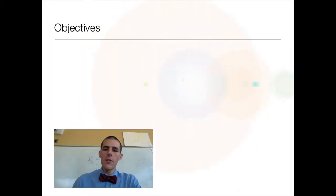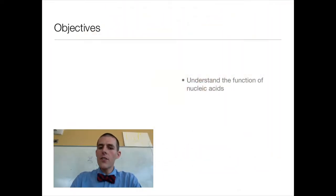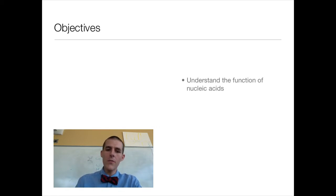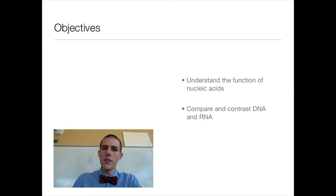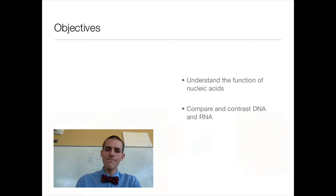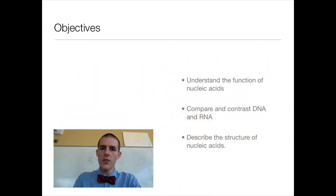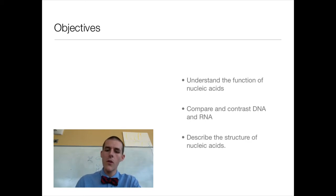There are three objectives. First, understand the function of a nucleic acid — knowing what they do has been a theme in our macromolecules unit. Second, compare and contrast DNA and RNA, two things you've heard about in basic biology classes. And finally, describe the structure of a nucleic acid, because structure is the big thing we're concerned about with these macromolecules.